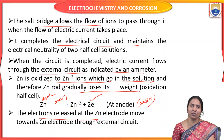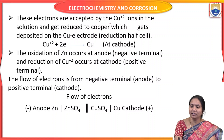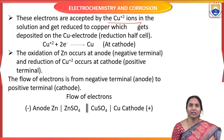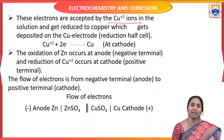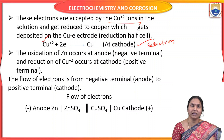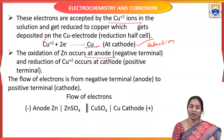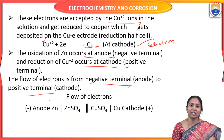The electrons released at the zinc electrode move towards the copper electrode through the external circuit. These electrons are accepted by the copper ions in solution — copper acts as the cathode. At the cathodic area, reduction takes place: copper metal ions gain two electrons and are deposited as copper. The flow of electrons goes from the negative terminal to the positive terminal, that is from anode to cathode, from zinc to copper.